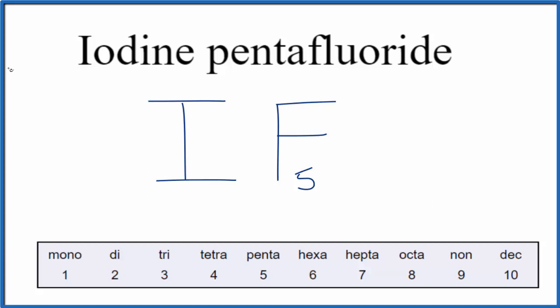We never write mono on the first element, even if we have one — we just leave it as iodine. This is Dr. B with the formula for iodine pentafluoride, IF₅. Thanks for watching.